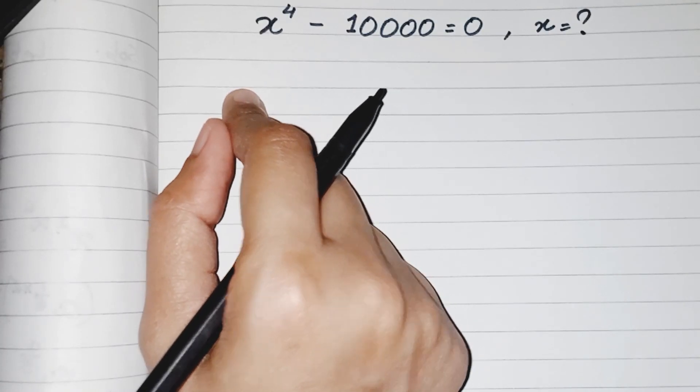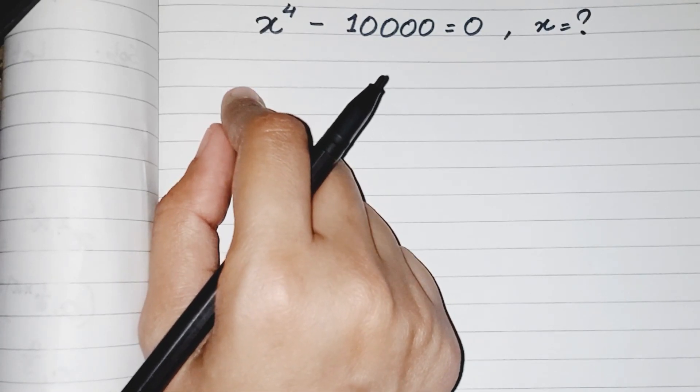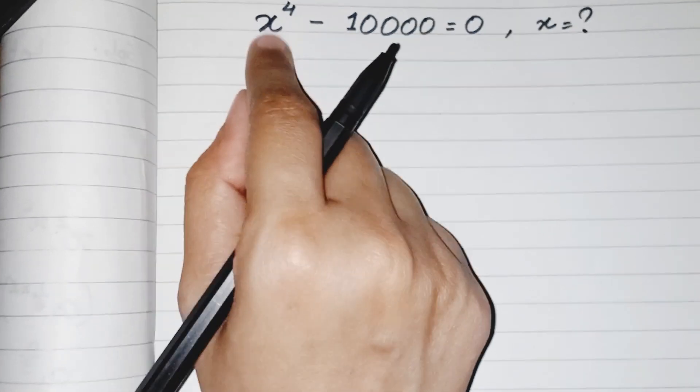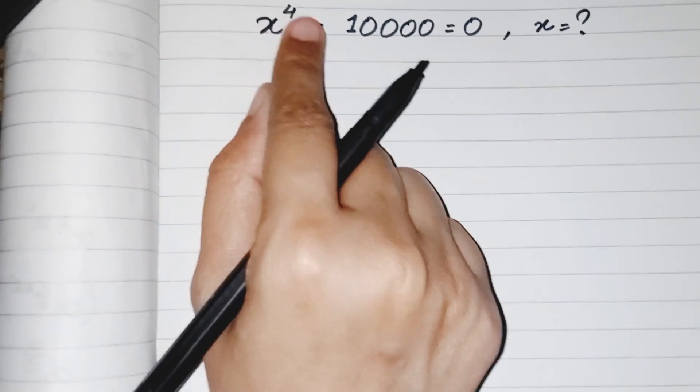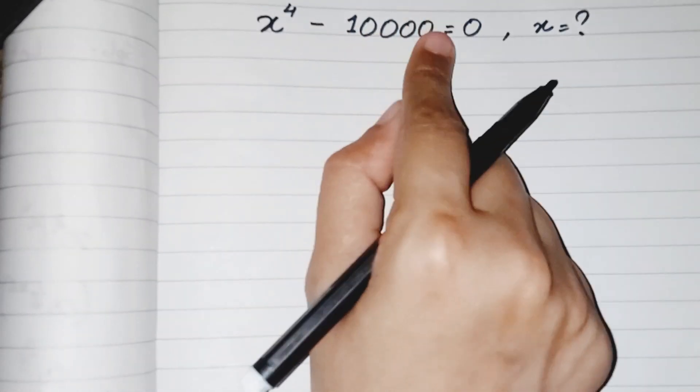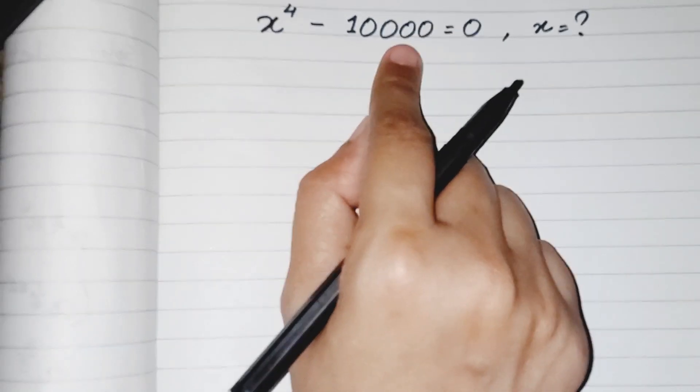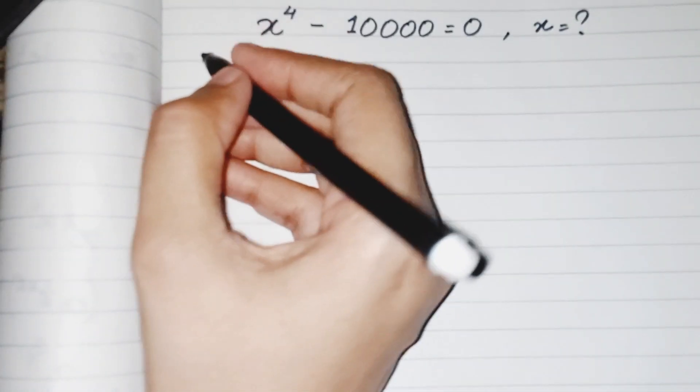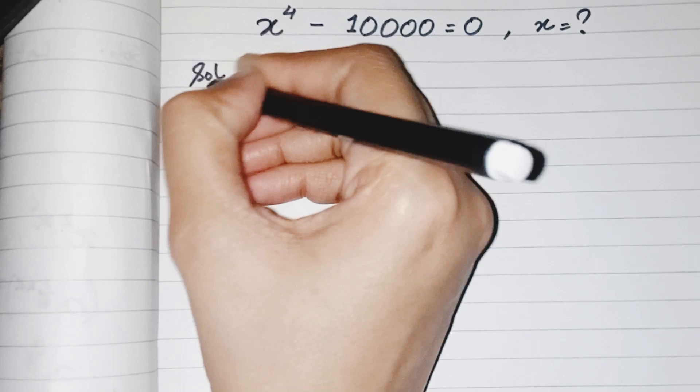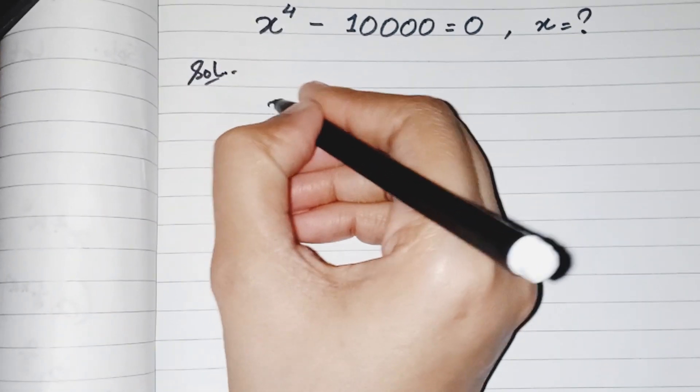Hello everyone, in today's exponential problem we have to find the value of x where my question is x power 4 minus 10,000 equals 0. First of all we will distribute it into an exponential form x power square over square.